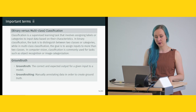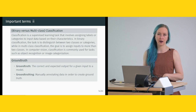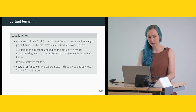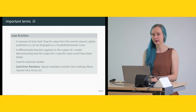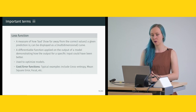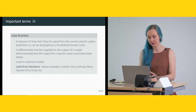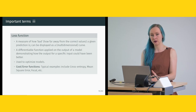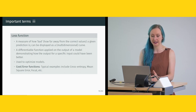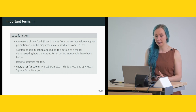Ground truth is the correct and expected output for a given input to a model. We will learn how to generate a ground truth dataset in a practical exercise later; ground truthing means manually annotating data to create ground truth. The loss function, also called cost or error function, is a measure of how bad a given prediction is — how far from the correct values. Mathematically defined as a differentiable function applied to the output of a model, demonstrating how the output for a specific input could have been better. It is used to optimize models; typical examples include cross-entropy, mean square error, and focal loss.